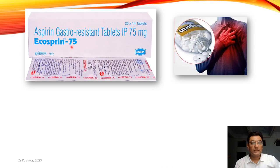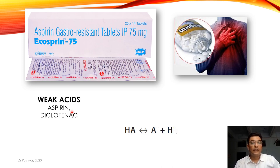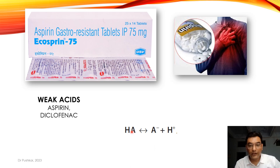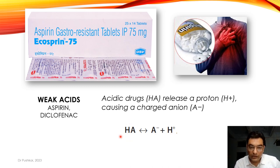Aspirin is a weak acidic drug. Aspirin and diclofenac are NSAIDs — non-steroidal anti-inflammatory drugs. These weak acids remain in the form of HA, and this HA releases a proton, producing a charged anion, remaining in equilibrium: HA ⇌ A⁻ + H⁺. The HA form is lipid soluble, while the ions H⁺ and A⁻ are not lipid soluble and cannot pass through the lipid membrane.